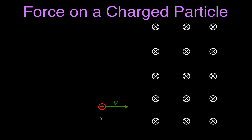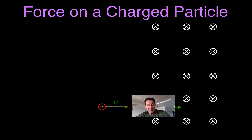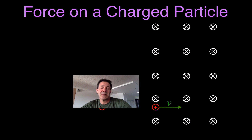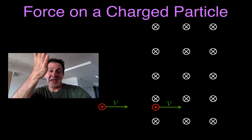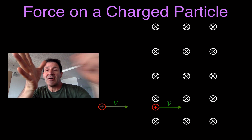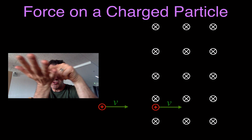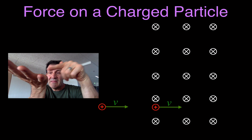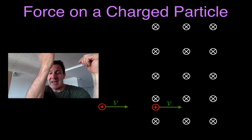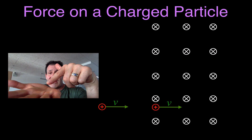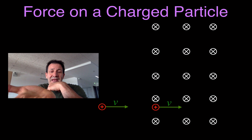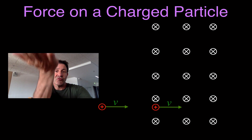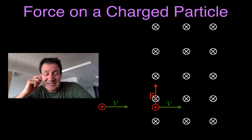The particle is going to travel straight through until it enters the magnetic field. To determine the direction of the force, we use the right-hand rule: place your thumb in the direction of the particle's motion — to the right — and curl your fingers into the page in the direction of the magnetic field. Your palm then shows the direction of the force, which is upward.